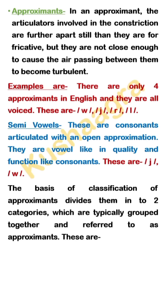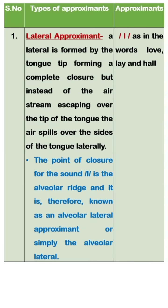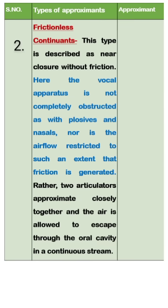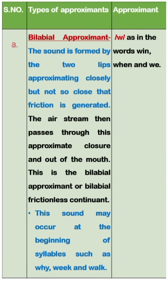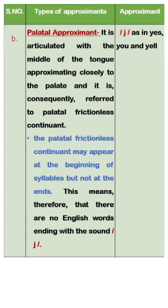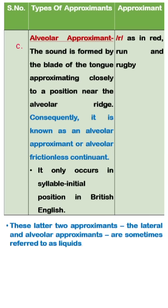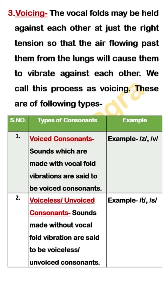Next comes the category of approximants. There are only four approximants in the English language, which are mainly classified into two categories: laterals and frictionless continuants, which is again of three types — bilabial, alveolar, and palatal.